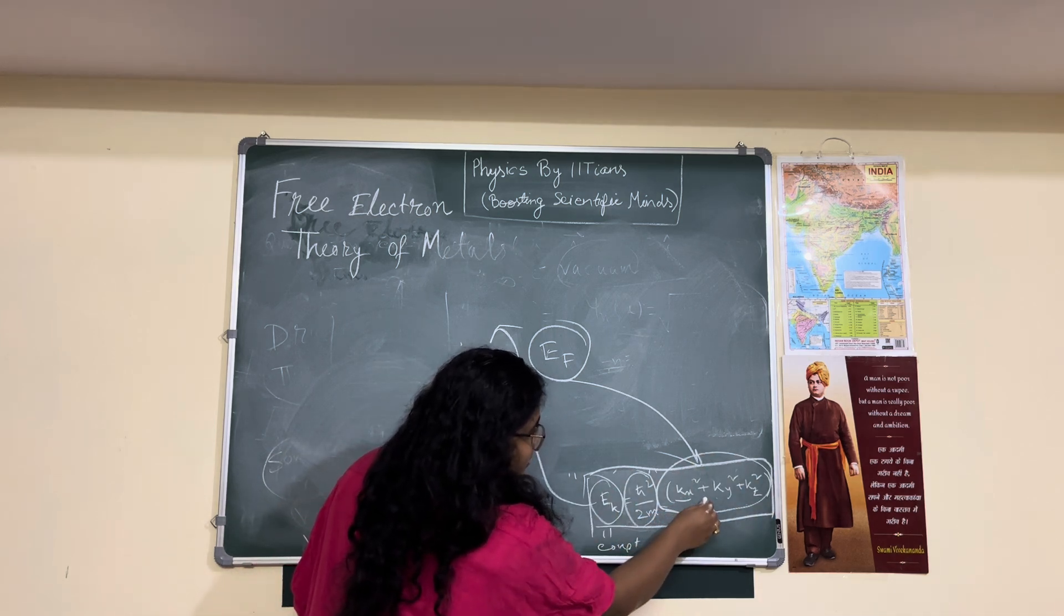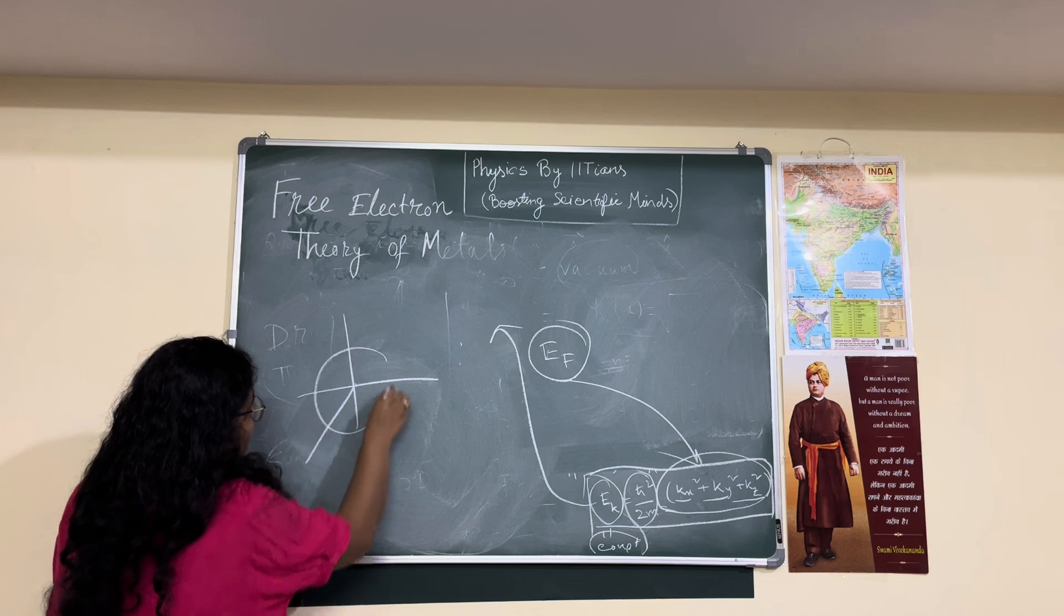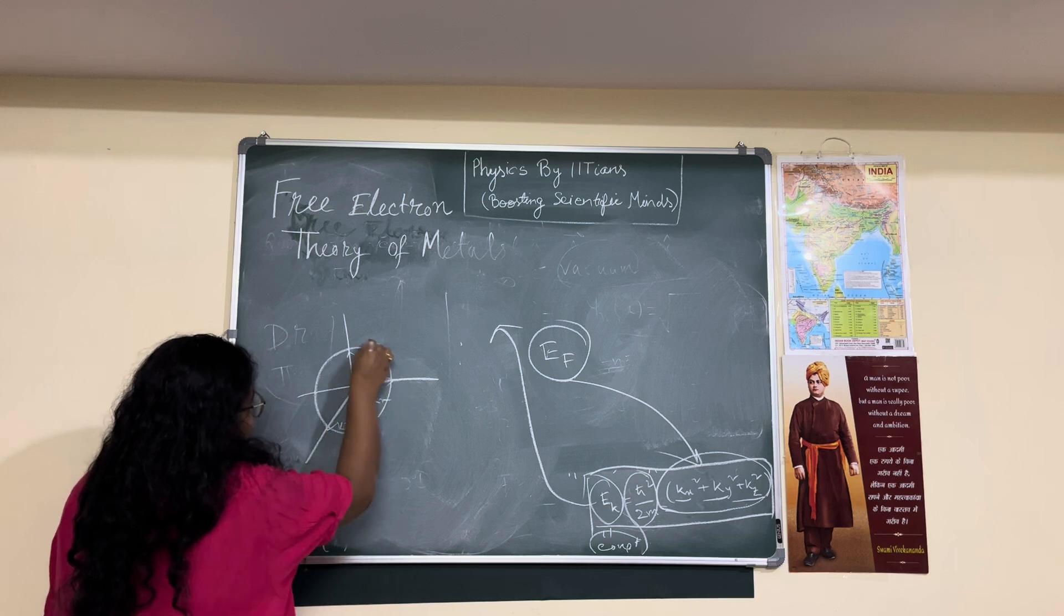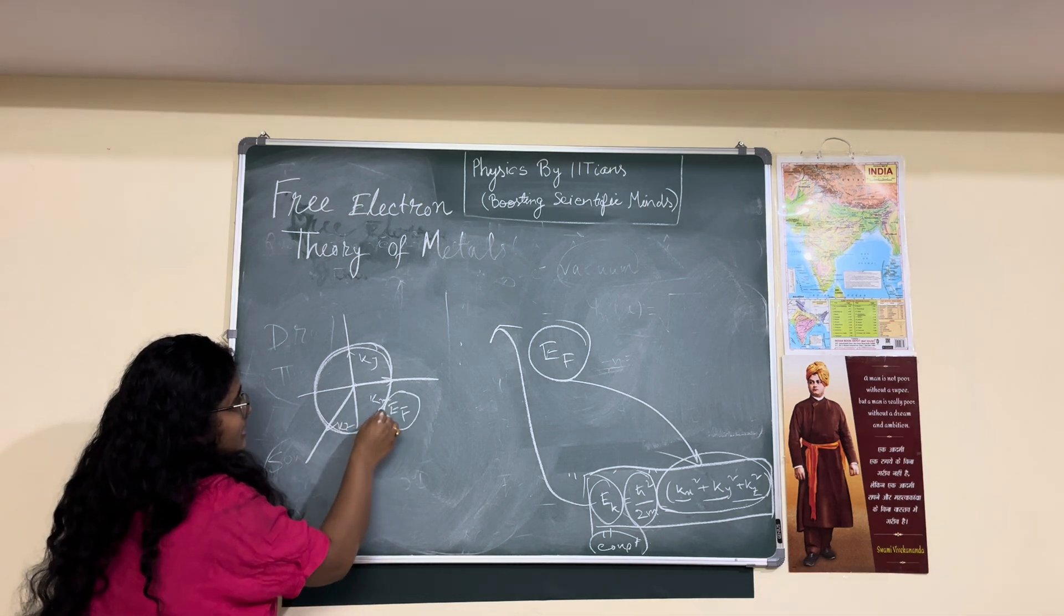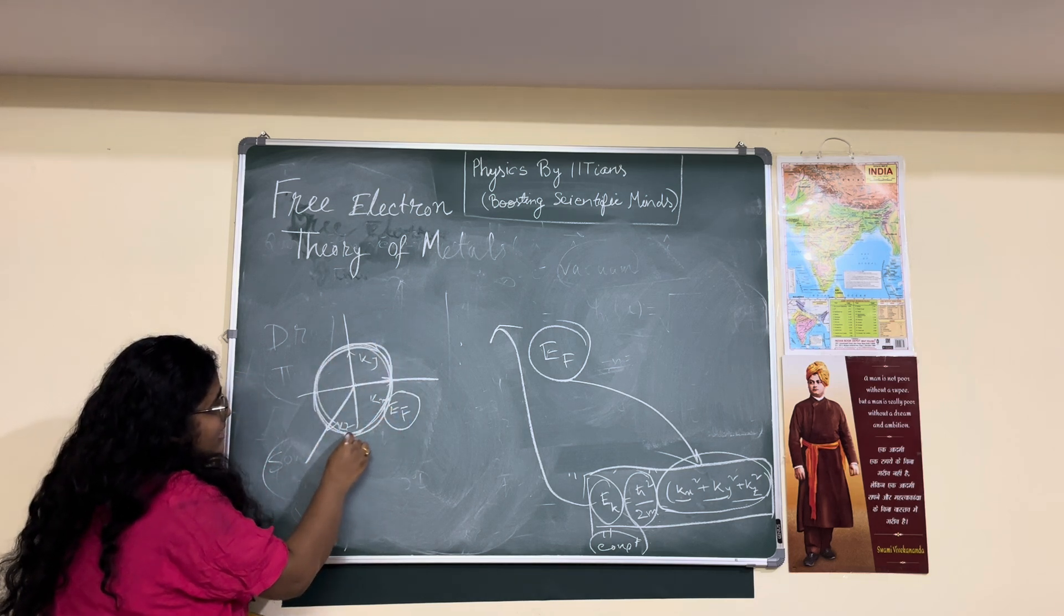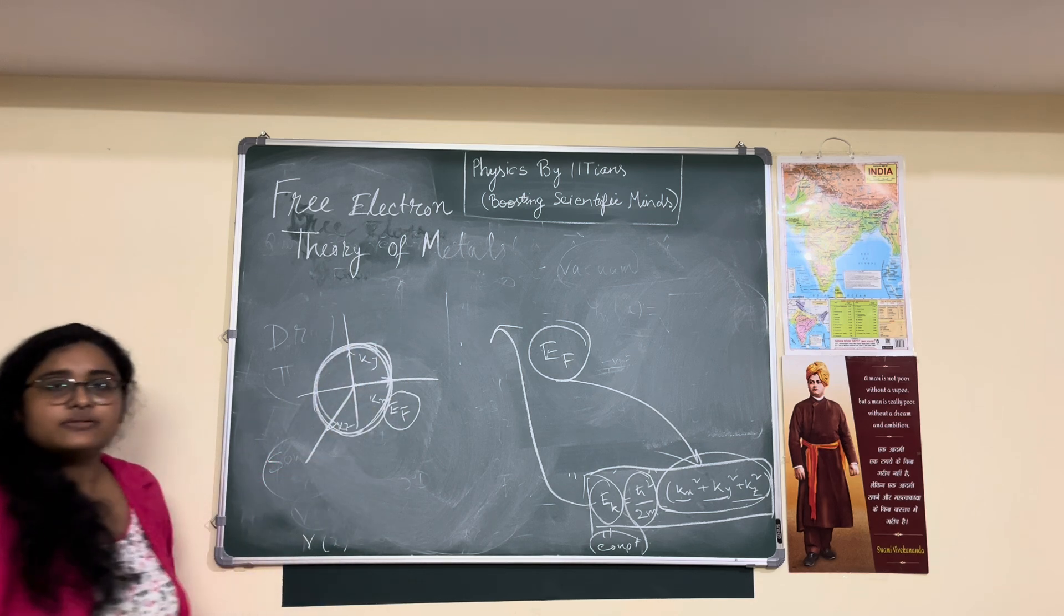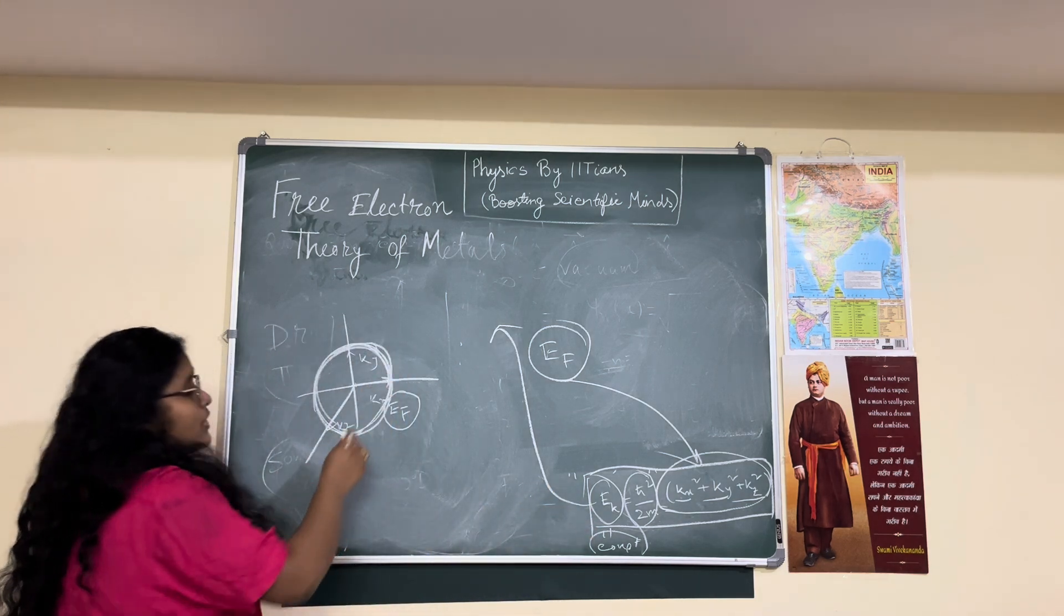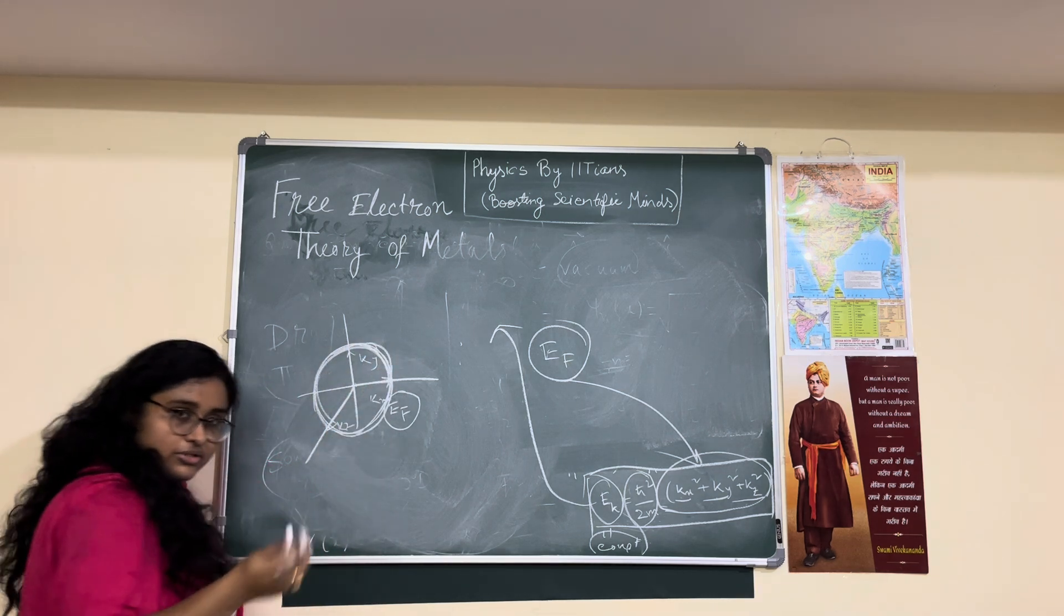This E_k is a constant, right? So k_x² is constant, k_y² is also constant, k_z² is also constant. So k_x² + k_y² + k_z² is a constant. This is the equation of a sphere with the radius of k_x, k_y, and k_z. And this sphere surface gives you the value of E_F, Fermi energy. So this is the Fermi sphere and this is the Fermi surface, and this shows all completely filled valence band at zero Kelvin.